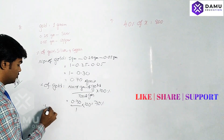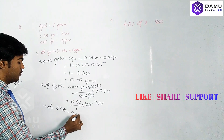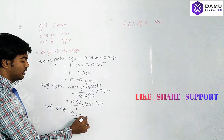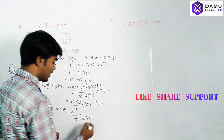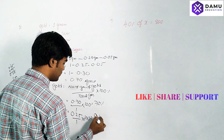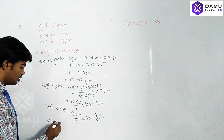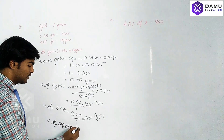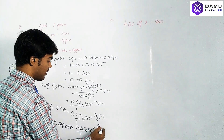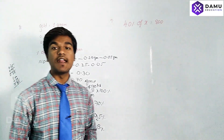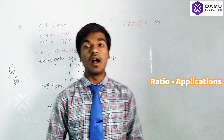Next, percentage of silver is 0.25 by total weight of 1 gram, multiplied by 100, which gives 25%. Percentage of copper is copper weight by total grams into 100, which gives 5%. If you add all — 70 plus 25 plus 5 — the total is 100%. So like this we solve the question.